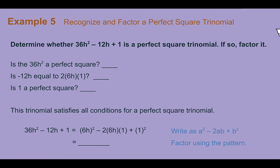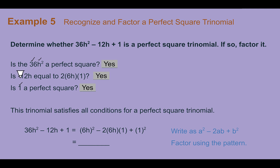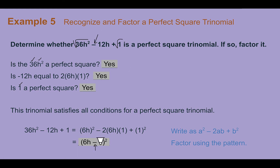Example 5: Recognize and factor a perfect square trinomial. Determine whether 36h squared minus 12h plus 1 is a perfect square trinomial. Is 36h squared a perfect square? Yes — 36 is a perfect square and h squared is h times h. Is 1 a perfect square? Yes — 1 times 1. In the middle, is 12h equal to 2 times 6h times 1? Yes, and with the negative sign we can treat it as negative 1 times negative 1. This trinomial satisfies all conditions and is a perfect square trinomial. Factored, it is 6h minus 1 squared.